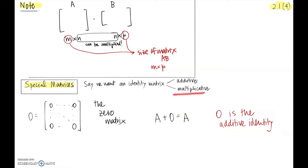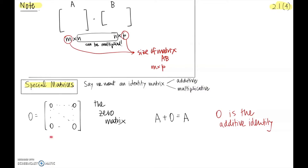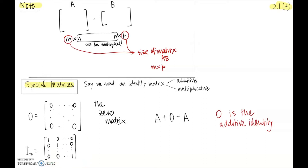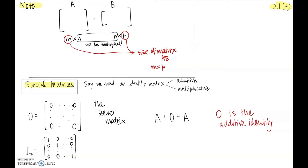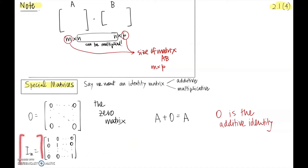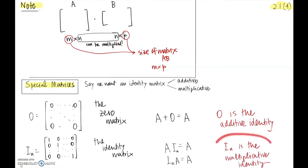What would the multiplicative identity look like? Would it be a matrix full of ones? Unfortunately, because of how matrix multiplication works, that doesn't work — multiplying by a matrix of all ones yields a different matrix. The multiplicative identity matrix is called Iₙ, an n by n matrix with zeros everywhere except on the main diagonal from upper left to lower right, where there are ones. This picks up all the right elements so that Iₙ times A equals A.